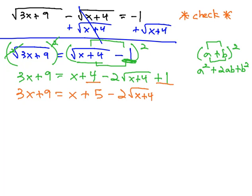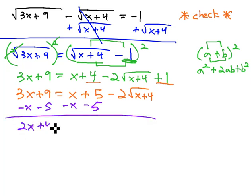Now that we've taken care of that first radical, we're going to go back and take care of the second radical by isolating it. Getting this square root alone, and we can do that by subtracting x and subtracting 5. Gives us 2x plus 4 equals negative 2 square root of x plus 4.